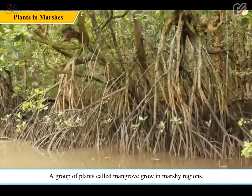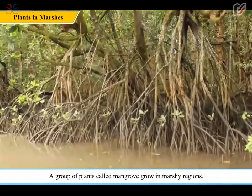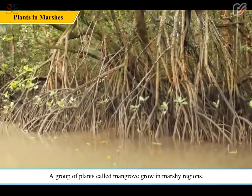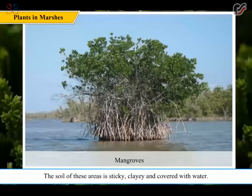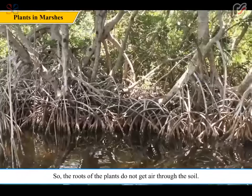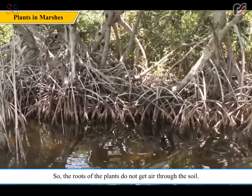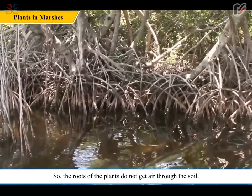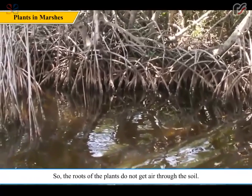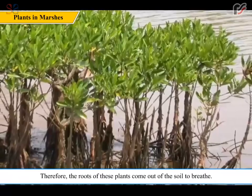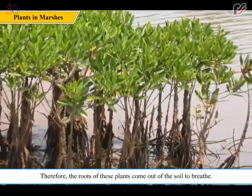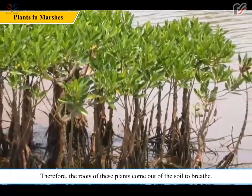A group of plants called mangroves grow in marshy regions. The soil of these areas is sticky, clay, and covered with water, so the roots of the plants do not get air through the soil. Therefore, the roots of these plants come out of the soil to breathe.